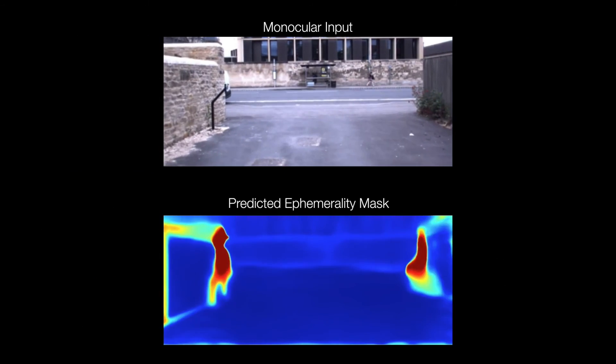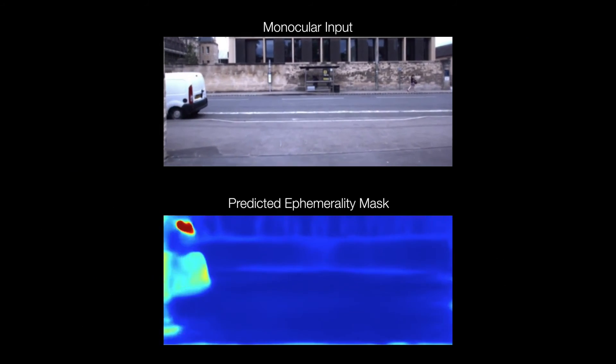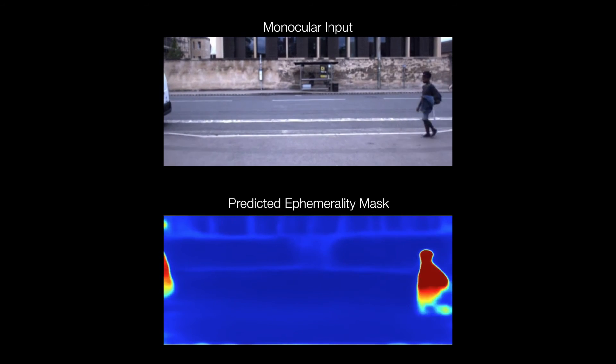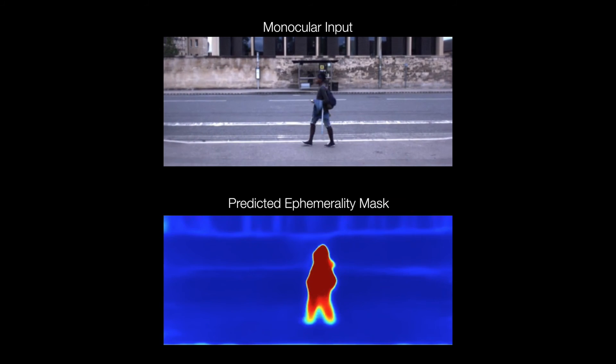To achieve this robust visual odometry we predict a pixel-wise ephemerality mask. Ephemeral objects which don't belong to the underlying scene and are poor candidates to use in VO are shown in red, such as vehicles and pedestrians. Objects which are static and are good candidates to use in VO are shown in blue.